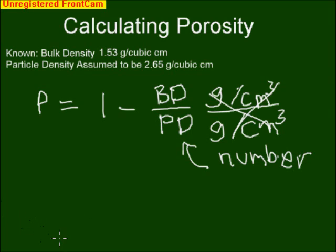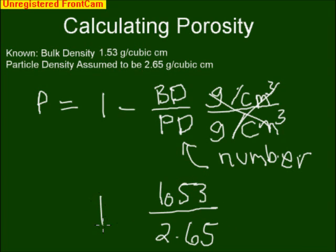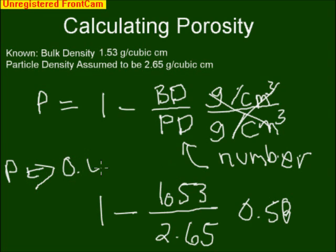From our previous example, we are going to assume our bulk density is 1.53 and our particle density is 2.65. When we calculate those values out, 1.53 divided by 2.65 is equal to 0.58, and 1 minus 0.58 leaves us with a porosity value of 0.42.